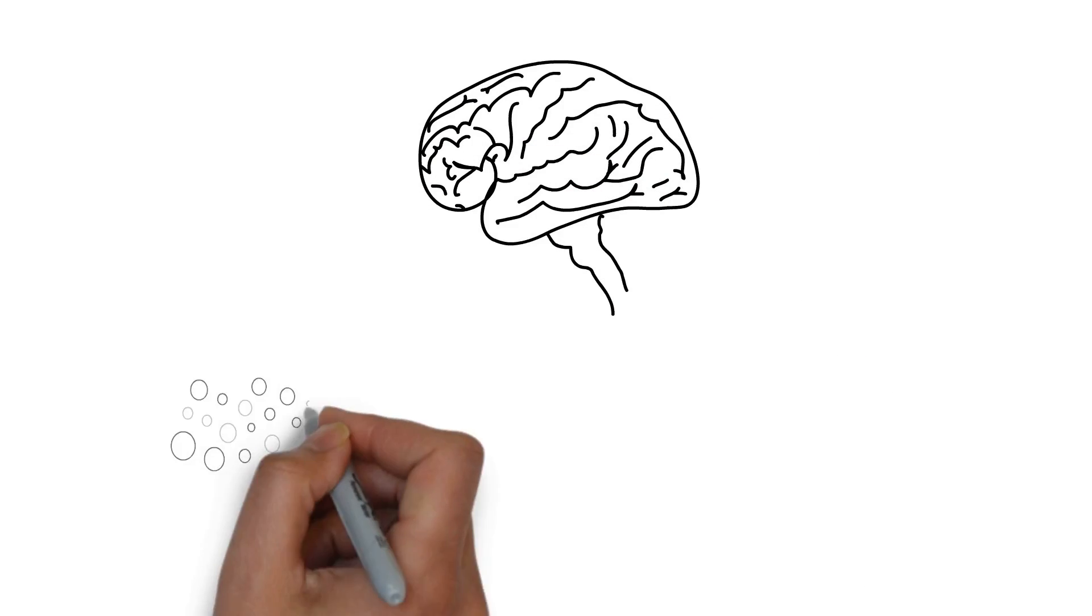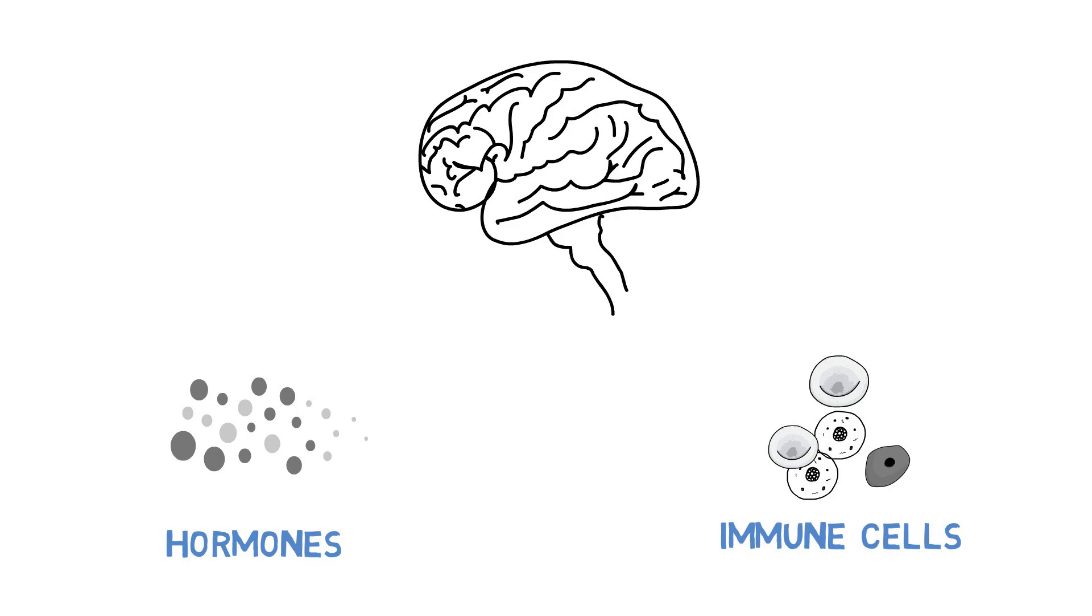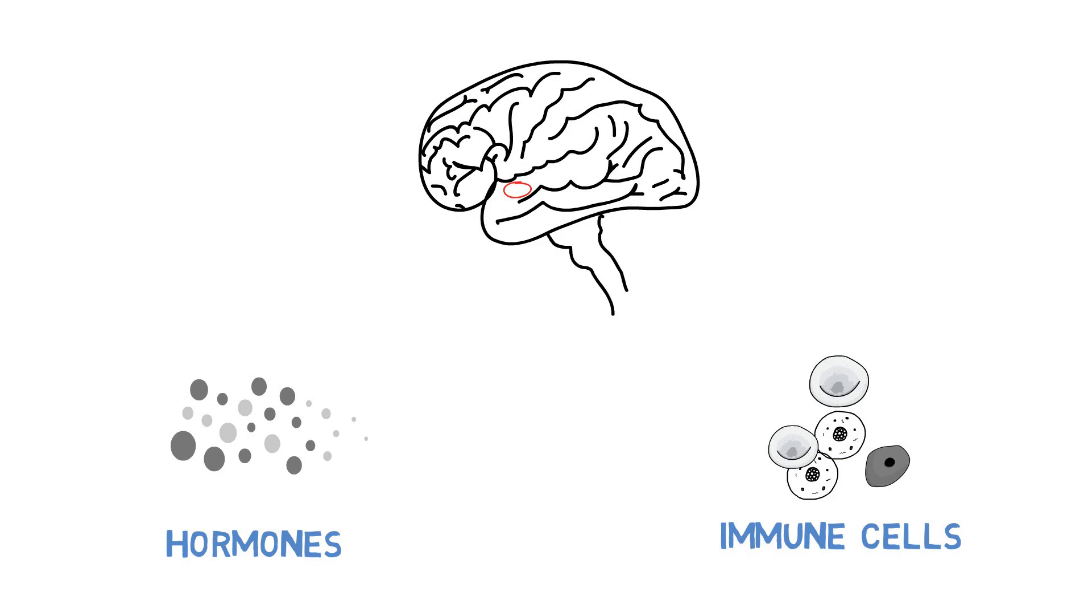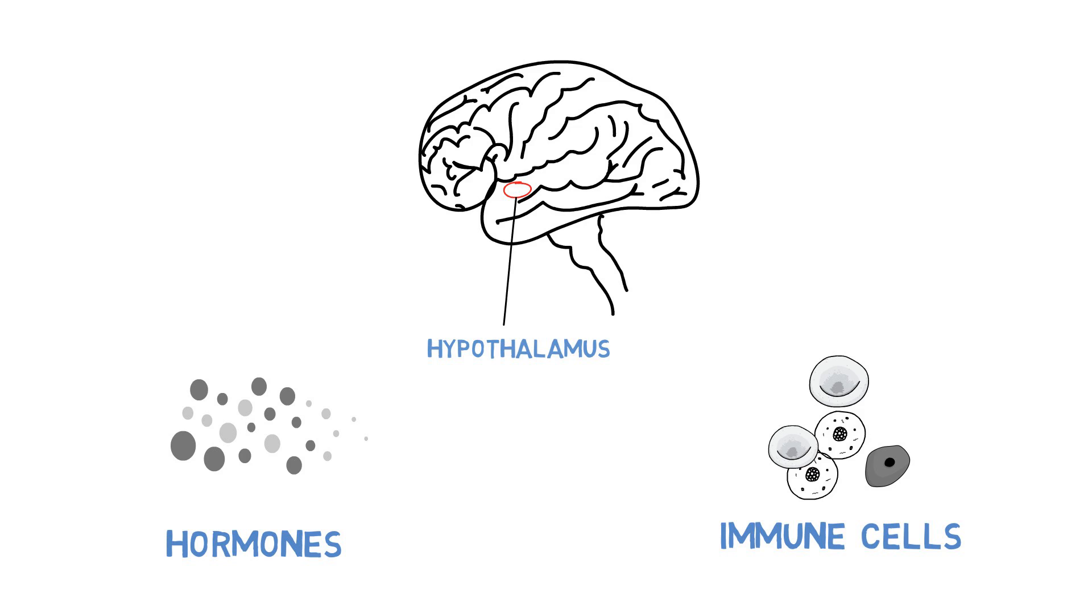What about besides pain? The brain can also regulate other things after placebo treatment, like hormone production and even immune responses. In both of these cases, a small, centrally-located brain region called the hypothalamus has been mapped to be involved.